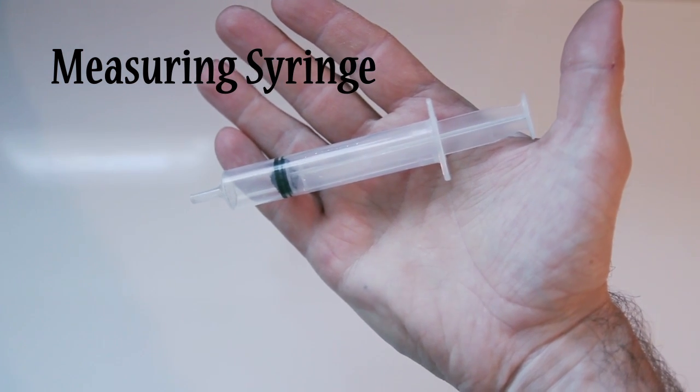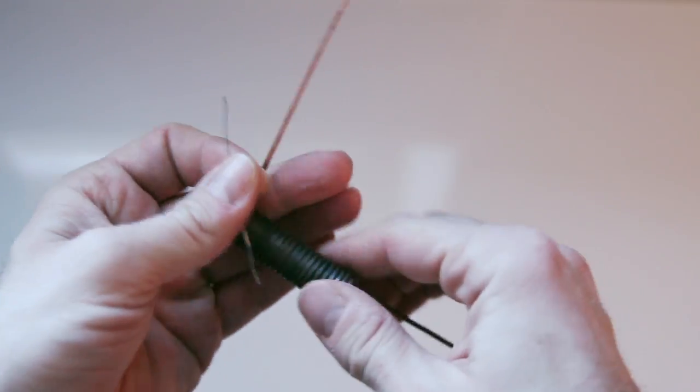You will need a measuring syringe, free of charge at most pharmacies. Now start off by taking approximately seven centimeters off that steel wire.